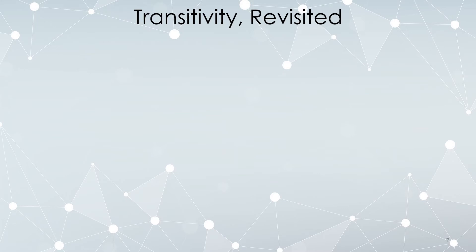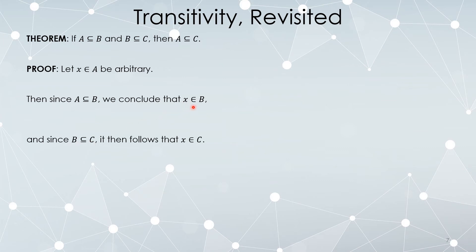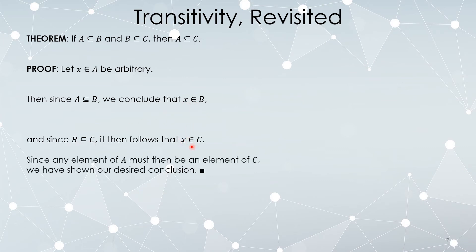Now we'll prove the same thing in our more relaxed written style. Here's the statement of the theorem: if A ⊆ B and B ⊆ C, then A ⊆ C. Proof: Suppose X is an arbitrary element of A. Then since A is a subset of B, everything that's an element of A is also an element of B, so X must be an element of B. Since B is a subset of C and X is now an element of B, that same element must be in C. Any element of A was shown to be an element of C, which is the definition of being a subset.